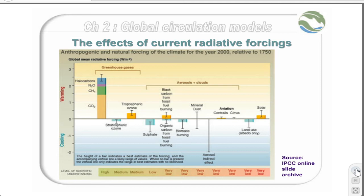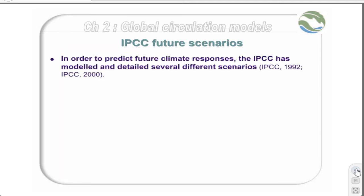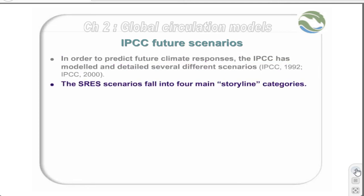The action of other forcing factors is very poorly understood, and so it is very hard to say with any certainty what effect they have on global temperatures. In order to predict future climate responses, the IPCC has modelled and detailed several different scenarios, as laid out in the Special Report on Emission Scenarios. These SRES scenarios fall into four main storyline categories.